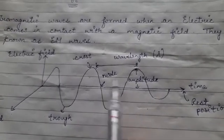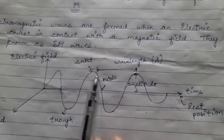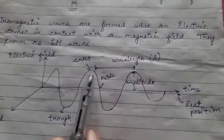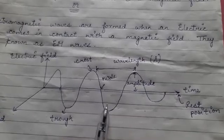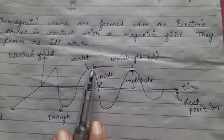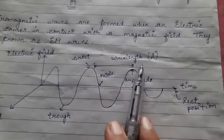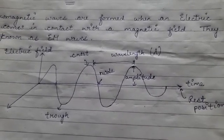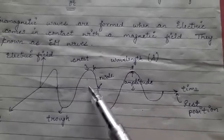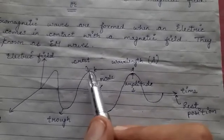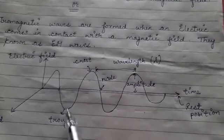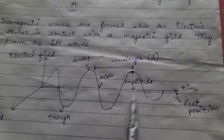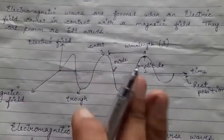Here we have one wave, and we need to find the wavelength. Wavelength is the length of one complete wave, represented by the symbol lambda. The distance from one node to another — from trough to crest — represents the wavelength. The distance from the center line to the crest is the amplitude, which is the maximum displacement.